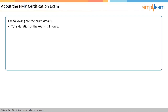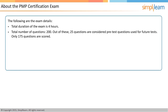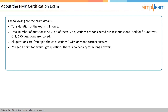The PMP exam is conducted for 4 hours and covers 200 questions, out of which 25 questions are considered pre-test questions used for future tests and are not scored. You will not be communicated about these questions — they might be any random pick. Therefore, you should answer all 200 questions with the same seriousness. PMI includes these questions to see how many test takers are getting them right, and based on this, they might decide to include them in future exams. Of the 200 questions, 175 will be scored. All questions are multiple choice with only one correct answer. You get one point for every correctly answered question and there is no negative marking. You may also mark a question for review and revisit it at the end, but you should attempt all 200 questions in the given time.